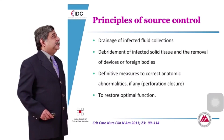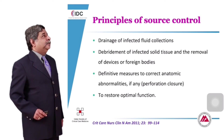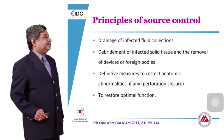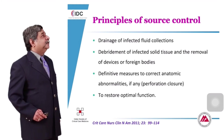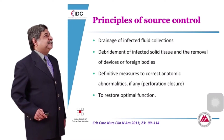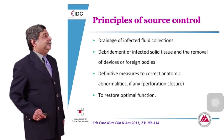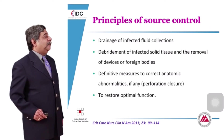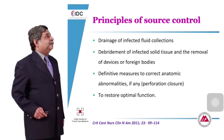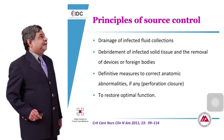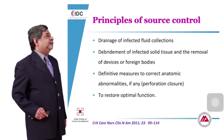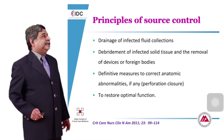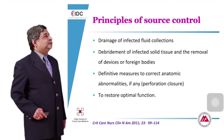The principles of source control involve four things: drainage of infected fluid collections (e.g., empyema or a pus-filled cavity), debridement of infected solid tissue, removal of devices or foreign bodies — for example, a peripherally inserted central line or a device used for chemotherapy — and definitive measures to correct anatomic abnormalities, such as closing a perforation or resecting and re-anastomosing the bowel to restore optimal function.